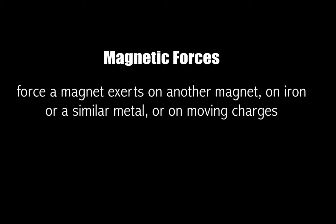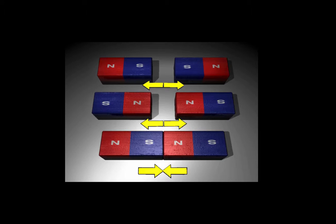Magnetic fields have the greatest influence on materials that are good conductors, that have metal properties. Something to keep in mind: an insulator would not be something that a magnetic field would have much influence on.